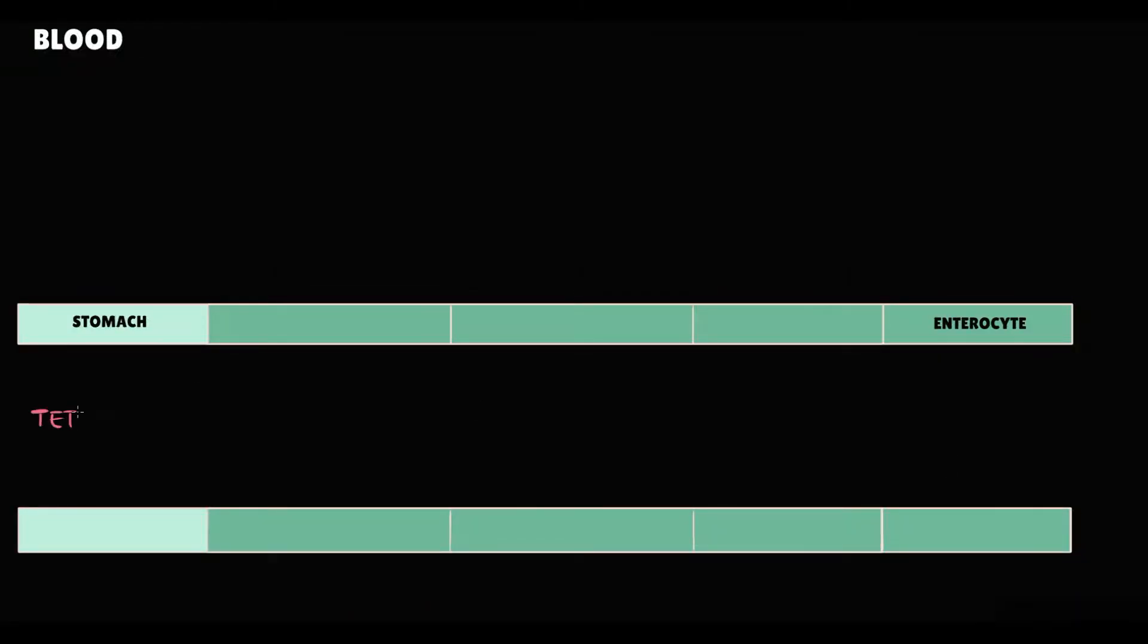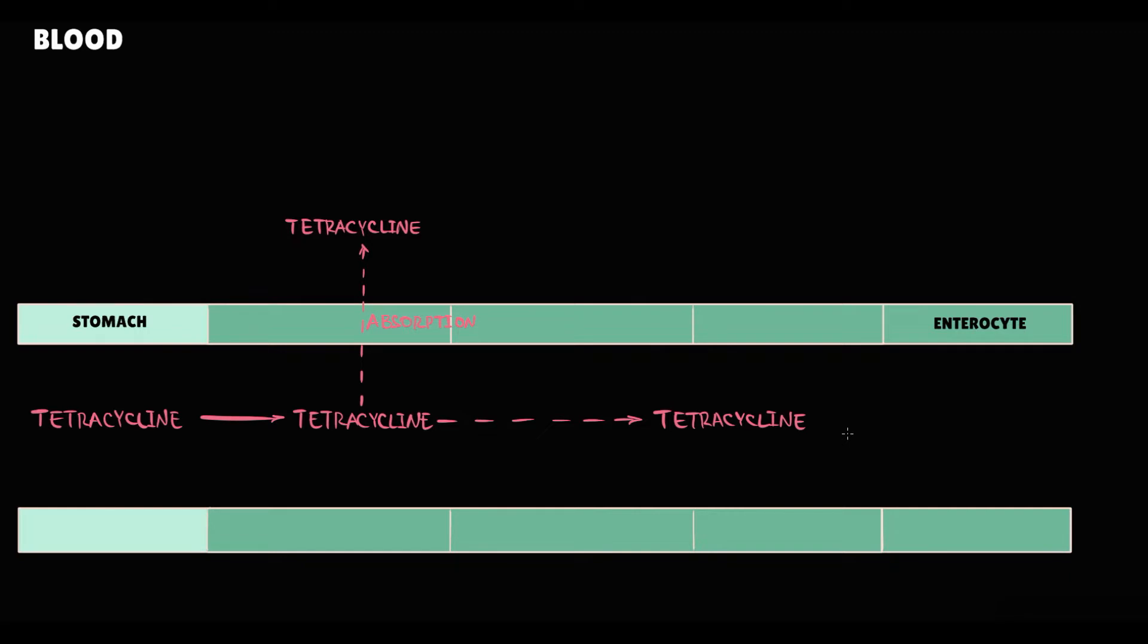When a patient takes tetracycline, it comes into the stomach and then into the intestine, where tetracycline undergoes partial absorption. So part of tetracyclines undergo absorption into the blood and another portion is left in the intestine. Also, tetracycline can be infused directly into the blood by IV infusion.